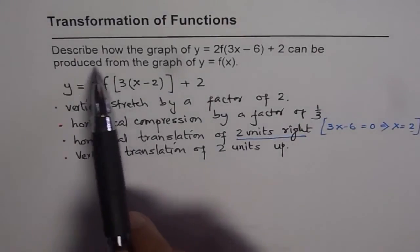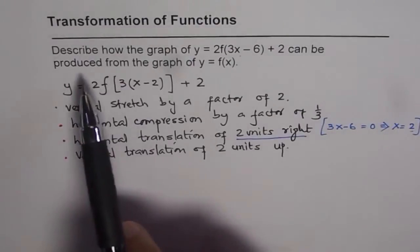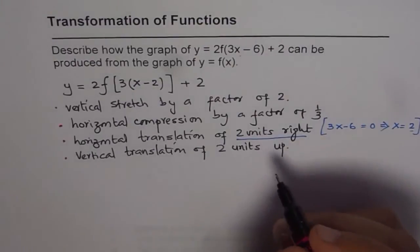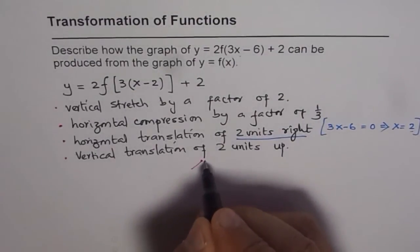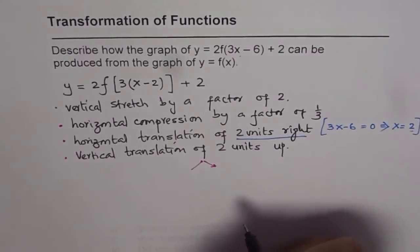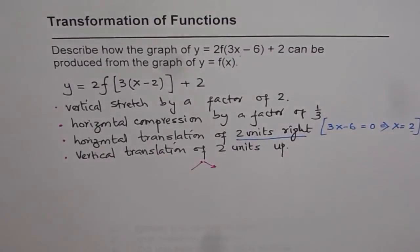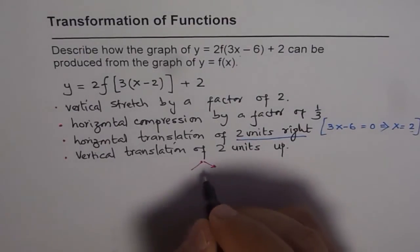Now, the question is, describe how this graph can be produced from y equals f of x. To produce this graph, you could follow two methods. I will prefer two methods. First is, you could do, let me use a different thing. So let me divide this into two methods.